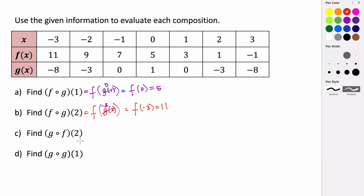Order matters. We see f of g of 2, and that's probably not going to be the same as g of f of 2. So let's look at what this composition would be. This is saying we're taking g and evaluating it at f of 2.